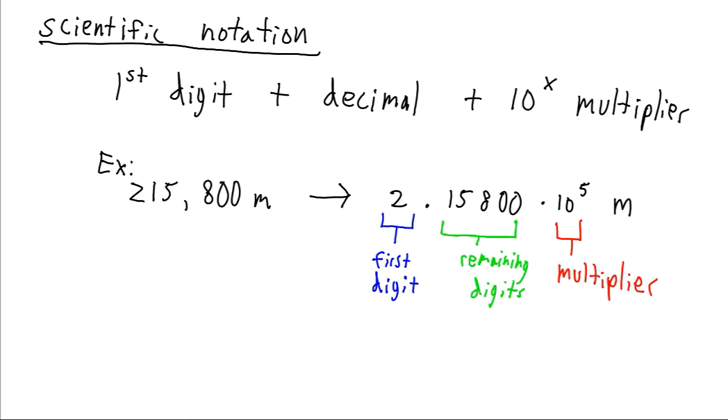So for example, our 215,800 meters, we would write that two to the left of the decimal, then we write the decimal point, and we write all the rest of those numbers on the right of the decimal point. And then we have a multiplicative factor here, always represented as 10 to the power of something. So if we took 10 to the power of five and multiplied it by this number here, we would get back our original number. This is very convenient because this will work for any number, and it doesn't require remembering those prefixes.